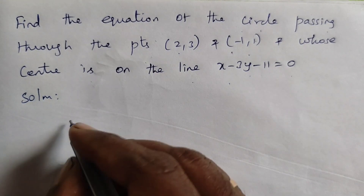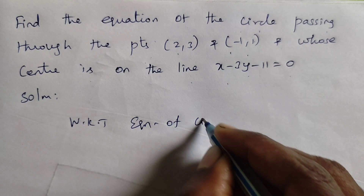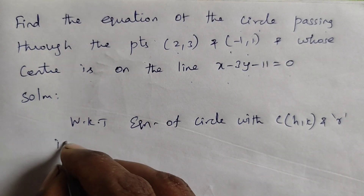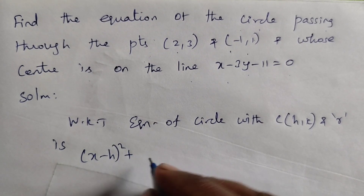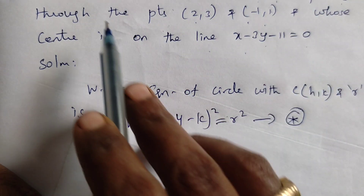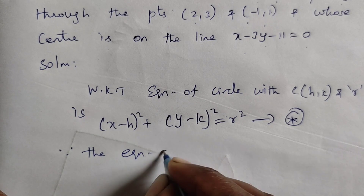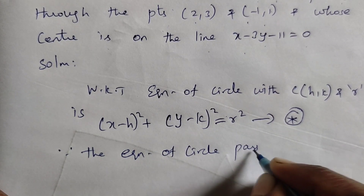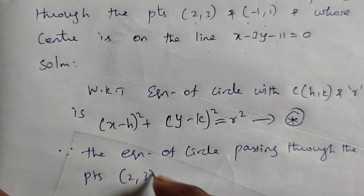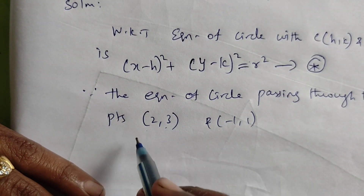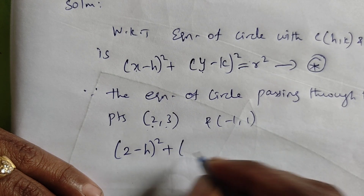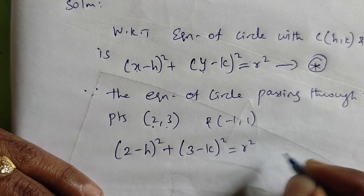The equation of a circle with center (h, k) and radius r is: (x minus h) squared plus (y minus k) squared equals r squared. Since the circle passes through the points (2,3) and (-1,1), we take the first point (2,3) and substitute x=2, y=3 to get: (2 minus h) squared plus (3 minus k) squared equals r squared. Let this be equation 1.